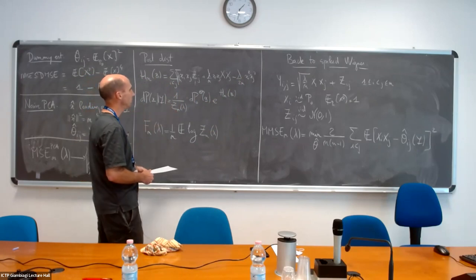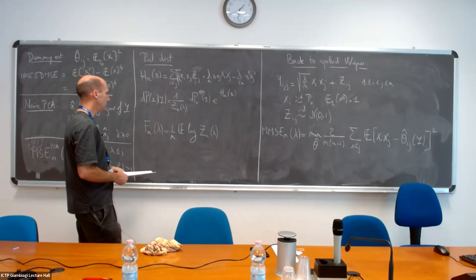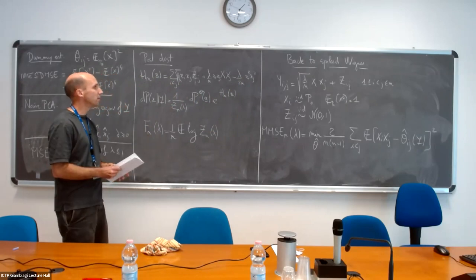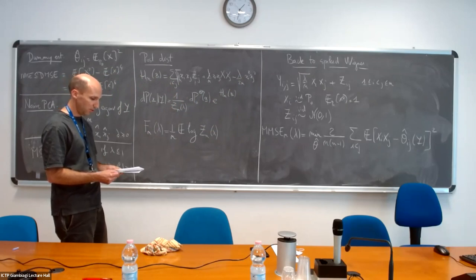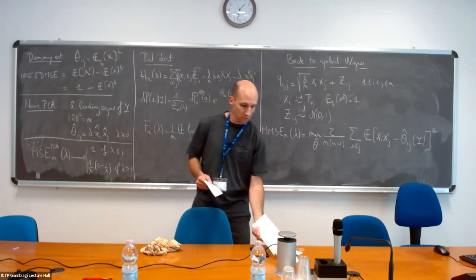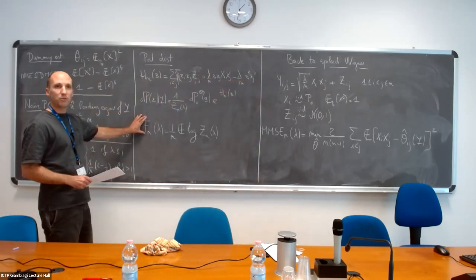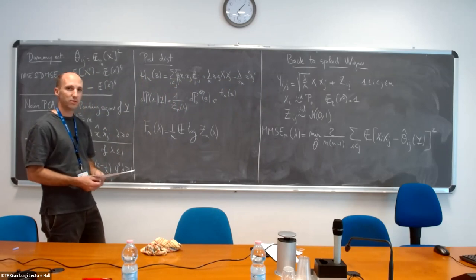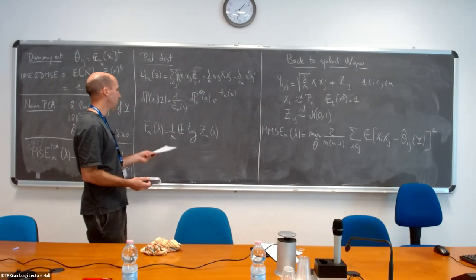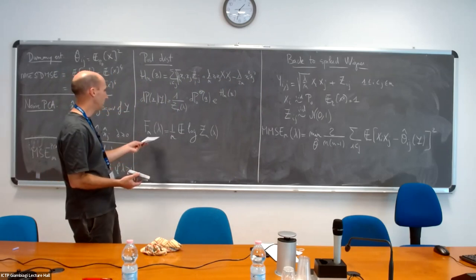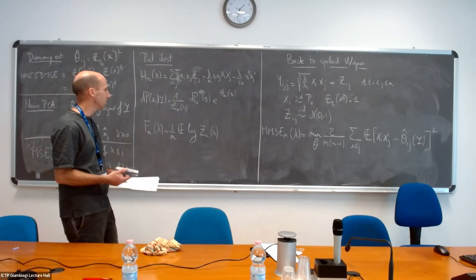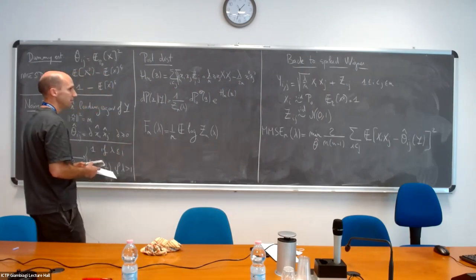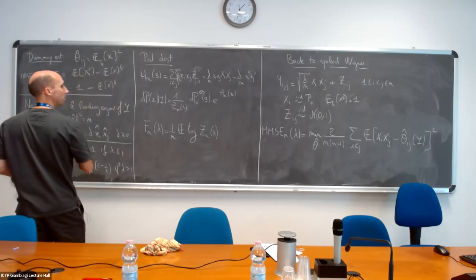This is a posterior distribution, defining the normalizing function Z as a function of lambda. Here is the free energy. The strategy is relatively clear — it's like the toy model — you need to compute a limit for this, and then everything will follow from this explicit computation. I will not give insight on the proof but will give the solution.